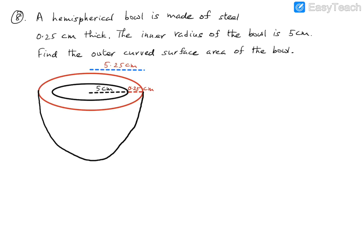Question number 8 from Exercise 11.2: a hemispherical ball is made of steel 0.25 centimeters thick. The inner radius is given as 5 centimeters. We are asked to find the outer curved surface area of the ball. The outer radius is the inner radius plus the thickness: 5 plus 0.25, which gives us the outer radius as 5.25 centimeters.